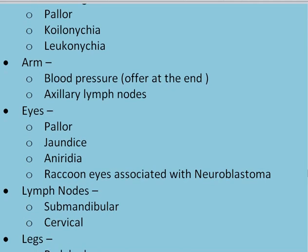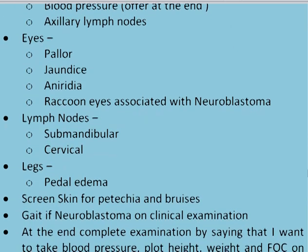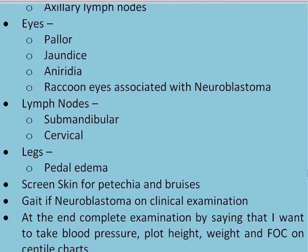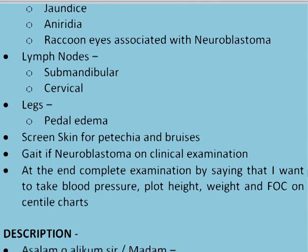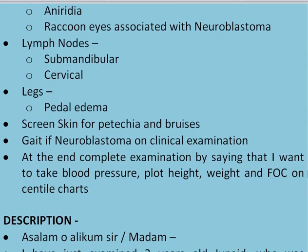Check the eyes for pallor, jaundice, aniridia, and raccoon eyes associated with neuroblastoma. Examine lymph nodes for submandibular and cervical lymphadenopathy. Check legs for pedal edema and screen the skin for petechiae and bruises. Get findings for neuroblastoma on clinical examination. At the end of complete examination, say that I want to take blood pressure, height, weight and head circumference (FOC) on centile charts.